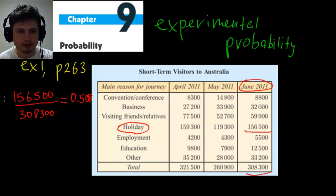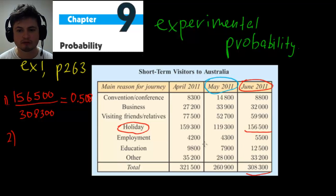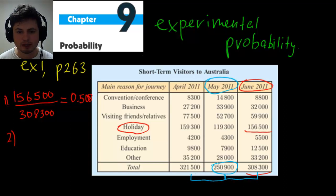That was question one. Question two is a bit different — it asks what is the chance that a person who arrived in Australia arrived in May. We're looking at the total for May and dividing it by the sum of totals for all three months.